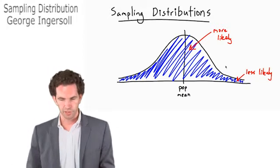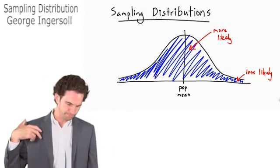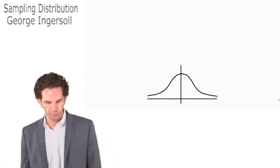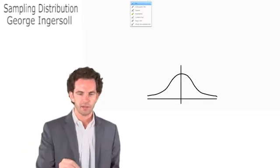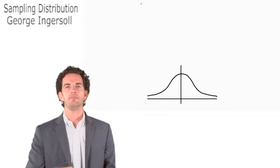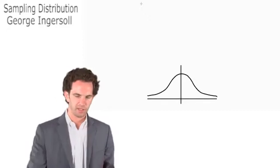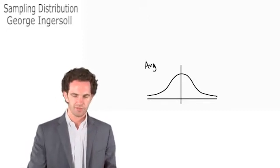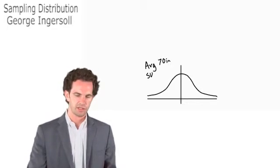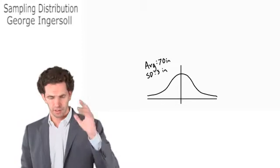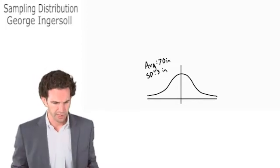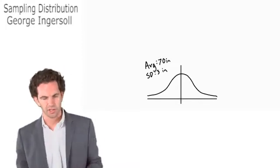Let's use an example to illustrate that. We've done this example before — let's talk about the height of men in the US. The average is 70 inches and the standard deviation is 3 inches. That's for the population of adult males in the United States: an average height of 70 inches, standard deviation of 3 inches.